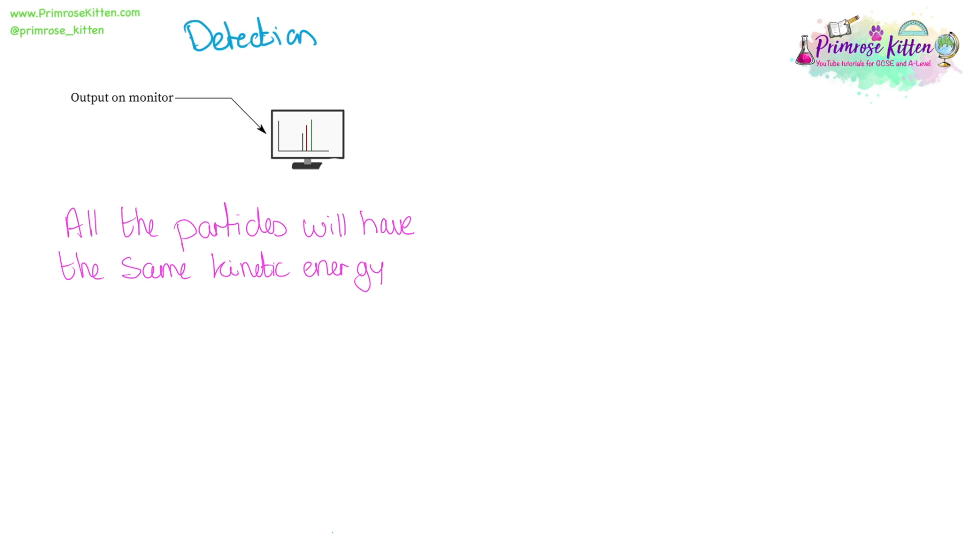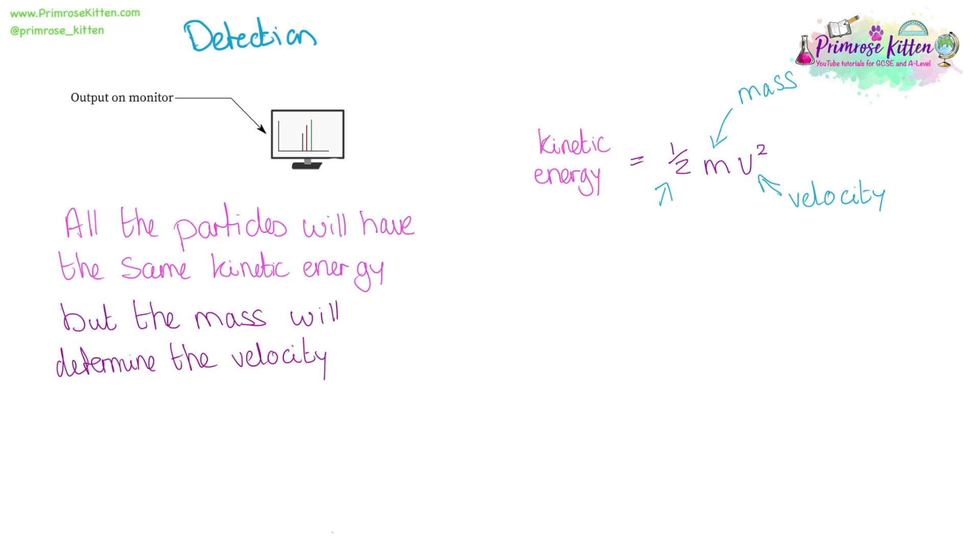All of the particles will have the same kinetic energy, and hopefully you'll be familiar with this equation, but kinetic energy can be calculated by half mass velocity squared. The mass will be what determines the velocity. In our equation, m is mass, v is velocity. The half is just a number, and the 2, the squared, is a power, but remember, it is only the velocity squared.